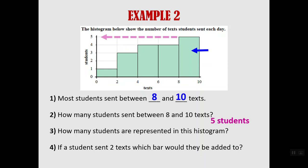Next question. How many students are represented in this histogram? We're going to add up all of the numbers for each of the bars. You can see between 0 and 2 texts there was one person. Between 2 and 4 there was 3, 4, 4 and 5. Add those all up and we see that there were 17 students who were polled for this particular data set.